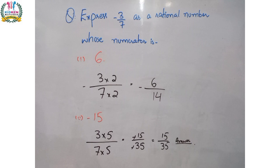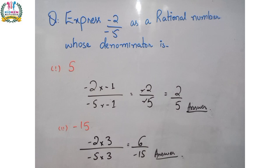The next question is: express minus 2 upon minus 5 as a Rational Number whose denominator is 5. We convert the denominator to 5. Since minus 5 multiplied by 1 gives minus 5, we multiply both numerator and denominator by 1. So minus 2 multiplied by 1 upon minus 5 multiplied by 1 gives us 2 upon 5.